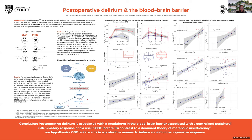Delirium is an acute and fluctuating state of confusion characterized by disturbances in memory, attention, cognition and consciousness. It's often associated with medical events like sepsis and surgery and can affect up to 50% of hospitalizations in those aged over 65. It's also been associated with increased mortality and functional and cognitive decline. The blood-brain barrier is a physical and chemical interface between the central nervous system and the rest of the body, and its permeability has been linked to cognitive decline in older adults.